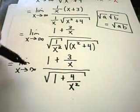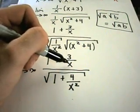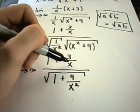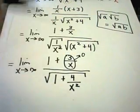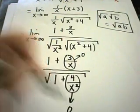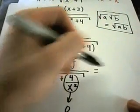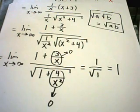And now I can evaluate my limit. Just like in the other examples, as x goes to infinity, 3 divided by x, well, I'll have 3 divided by a big number. This term's going to go to 0. Same thing with the 4 over x squared. It's going to go to 0. And I'm left with 1 over square root of 1, which is just positive 1. And that would be your answer in this case.